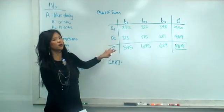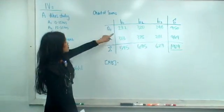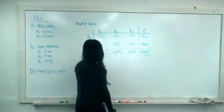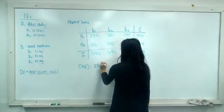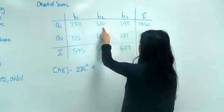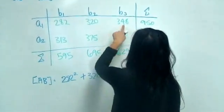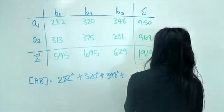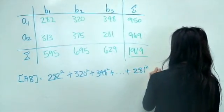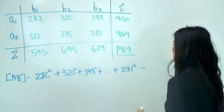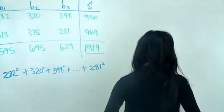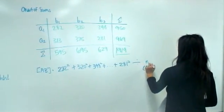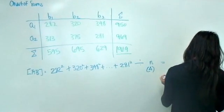For the AB bracket term, we use the individual cell sums from our chart: A1B1 = 282 squared, plus A1B2 = 320 squared, plus 348 squared, plus 313 squared, plus 375 squared, plus 281 squared. Divide by everything except AB, which leaves just lowercase n = 4. This gives a very large number.